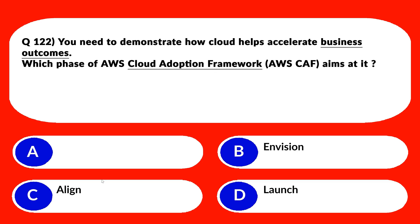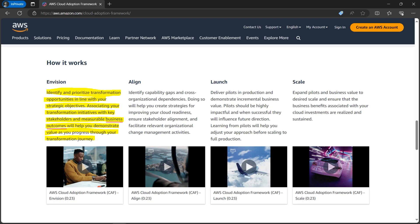Option D says 'Launch' — Launch focuses on executing the cloud migration plan, validating the cloud solution, and ensuring a smooth transition to the cloud. That is again an incorrect choice. We are left with one option: 'Envision.' If you look here, it's written: identify and prioritize transformation opportunities in line with your strategic objectives.